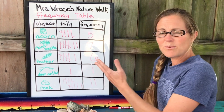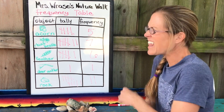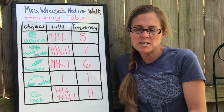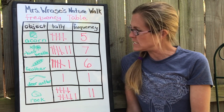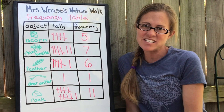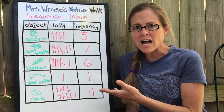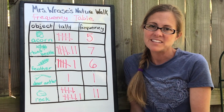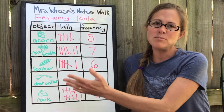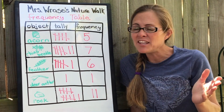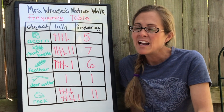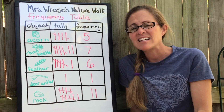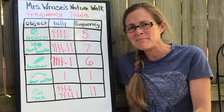And there you have it, guys — a frequency table. This frequency table organizes our nature walk collection like no other. We can easily see what we have. For example, how many acorns did we collect? We could ask the question: what object did we collect the most of? And what object did we collect the least of? You could even ask: how many objects were collected in all? Now that you've learned about frequency tables, if you want to, you can go out and explore nature on your own, collect some objects, and test out your skills at creating a frequency table. Till next time, guys — bye bye!